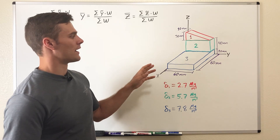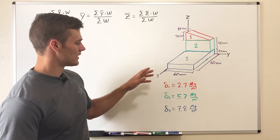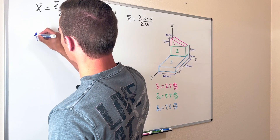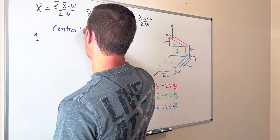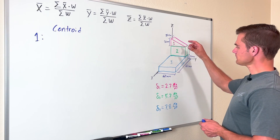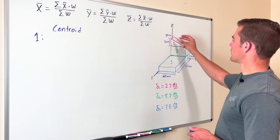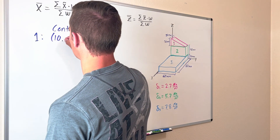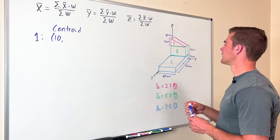The next step is to find the coordinates of the centroid of each one of these component parts. For object number one, we're going to find its centroid. In the X direction it is going to be in the middle of this rectangular prism — the width is 20 millimeters, so half of that is 10, so the X coordinate of the centroid of this object is 10.